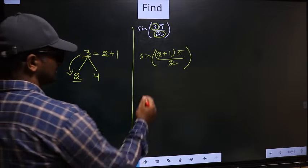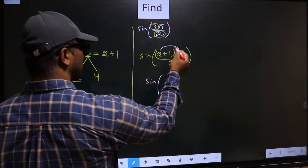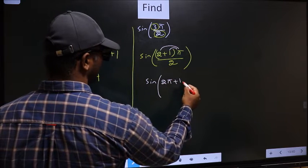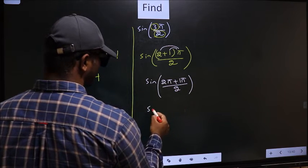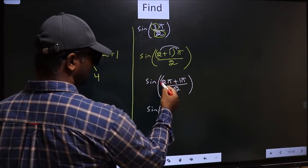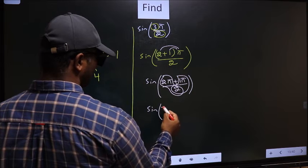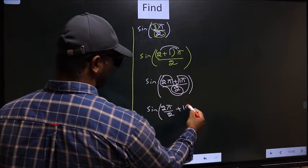Next, sin. Now you should open up the brackets. You get 2π plus 1π by 2. Now sin. You should split the denominator in this way: that is 2π by 2 plus 1π by 2.